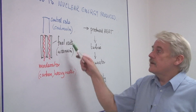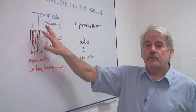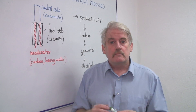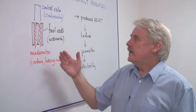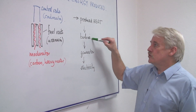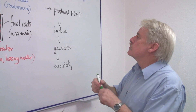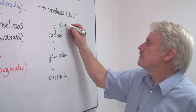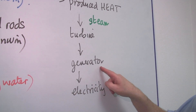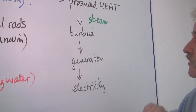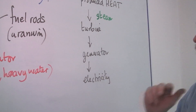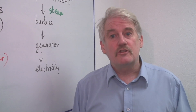So this is the basic core of the reactor, and all the reactor is doing is producing heat. It gets hot, it heats water, and that water is then used to produce steam to drive turbines. The turbines rotate electrical generators, and the electrical generators generate, of course, electricity for us to use in our homes. So that is how nuclear energy is produced.